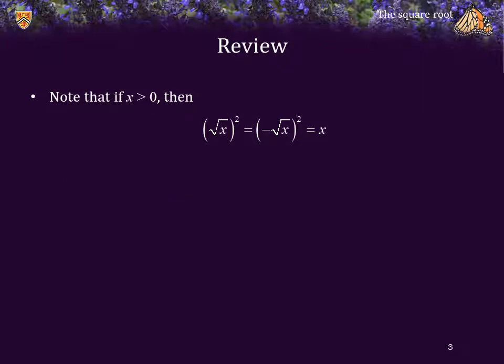Note that if x is a positive real number, then it has two square roots. The square root of x, which is greater than 0 — if we square that, we get x. And if we also square the negative of the square root of x, we still get x. Similarly, if we multiply the square root of x by j and square that entire expression, we get negative x. And similarly, if we square the negative square root of x times j, we also get a second root of negative x.